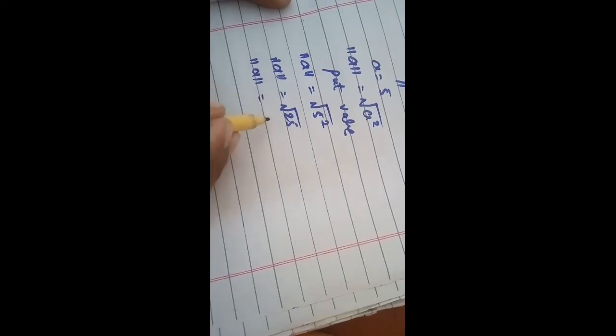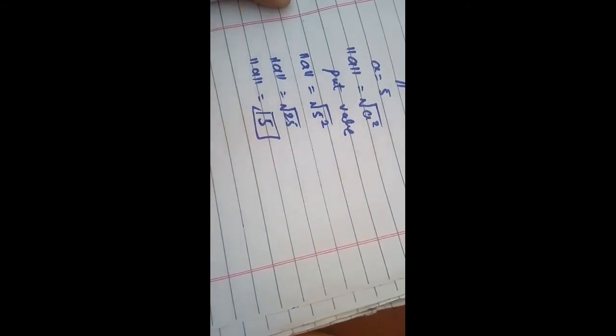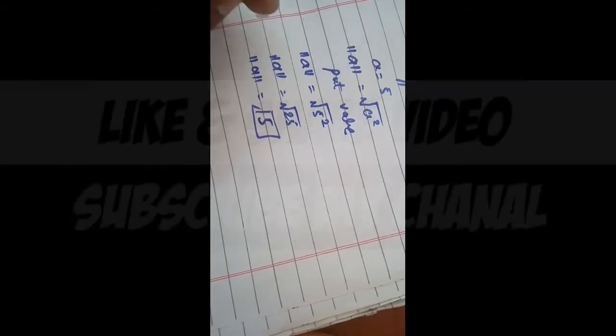of the under root, this value becomes 5. So this is a norm of a, so this formula you can use to find a norm of any value.